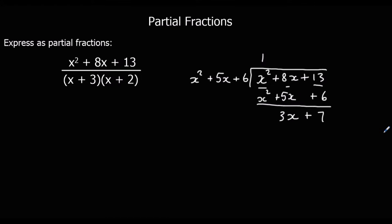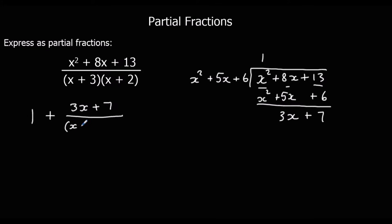So we can rewrite our fraction: there's 1 on the outside — 1 whole — plus the remainder, which is 3x plus 7, over the original denominator, (x plus 3)(x plus 2). Now we can split the fraction part into partial fractions, just as we did before. We've changed it into a proper fraction, so now we can carry on as normal.